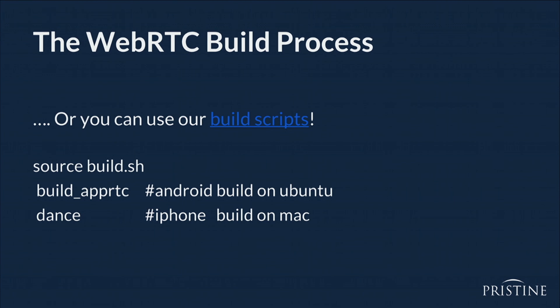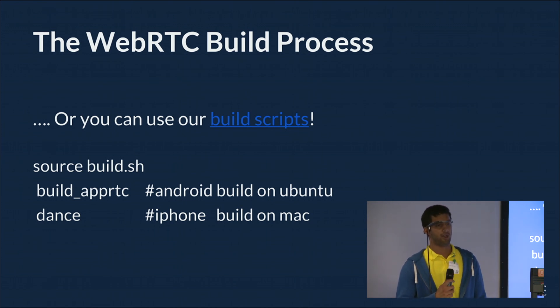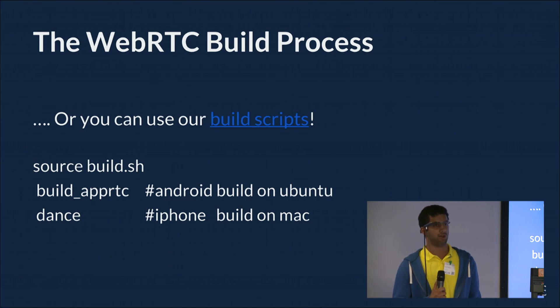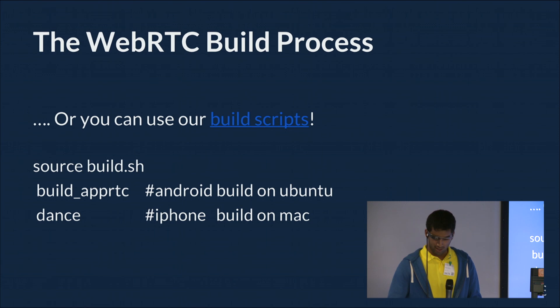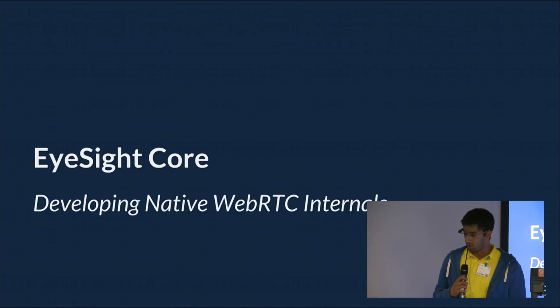You can also just use our build scripts that we open-sourced — they're really simple to use. All you have to do is pull down our GitHub repo and source the build script file. You can do build AppRTC for Android and for iPhone. For the iOS version, I also have an Xcode project that runs the AppRTC demo within Xcode, so you don't have to worry about all the complicated stuff underneath the hood. Now I'm going to hand it off to Aaron, who's going to explain a little bit more of the iSite core.